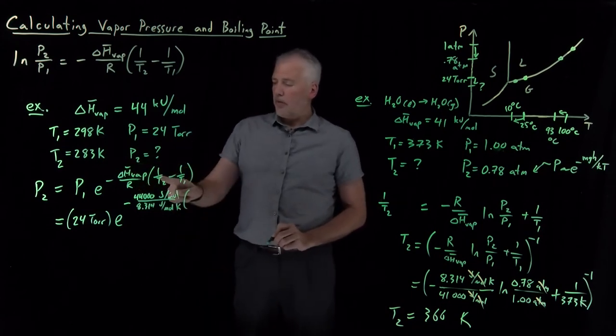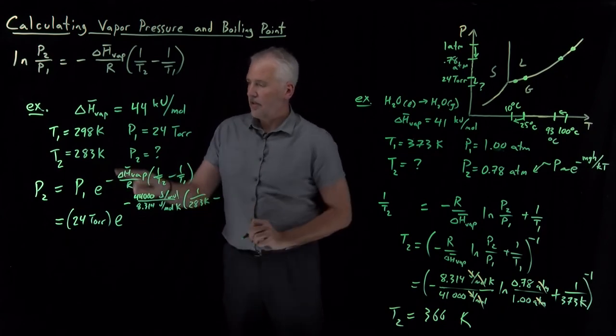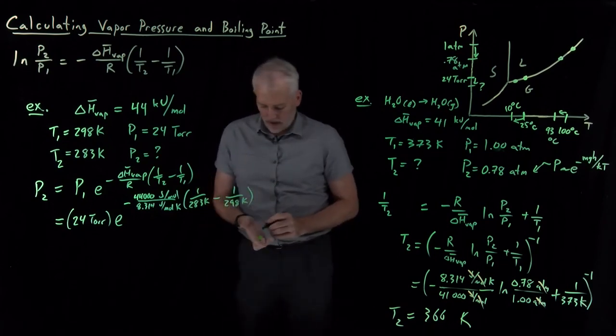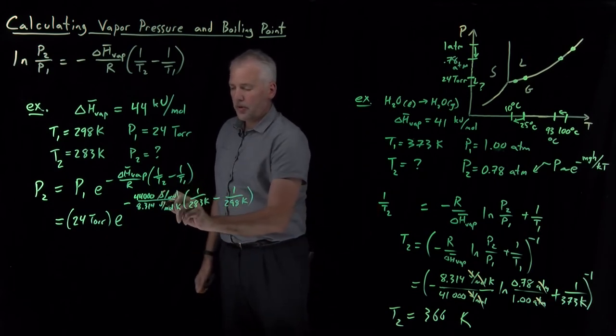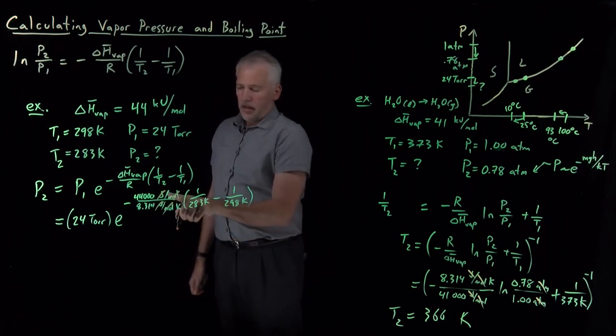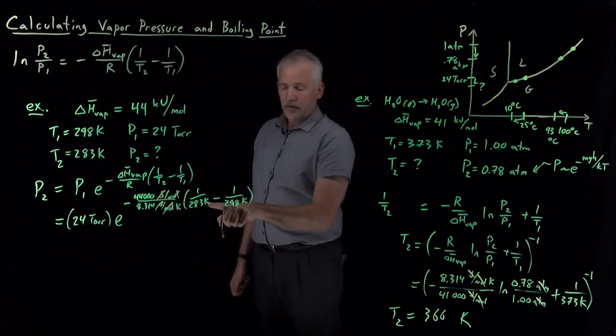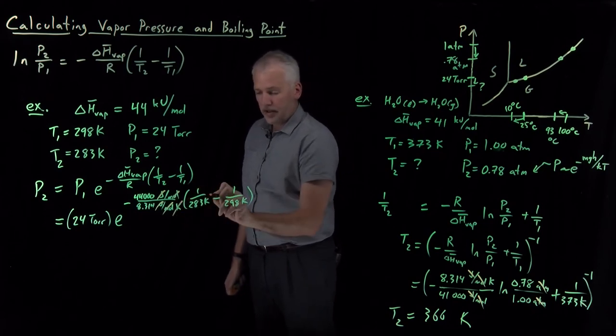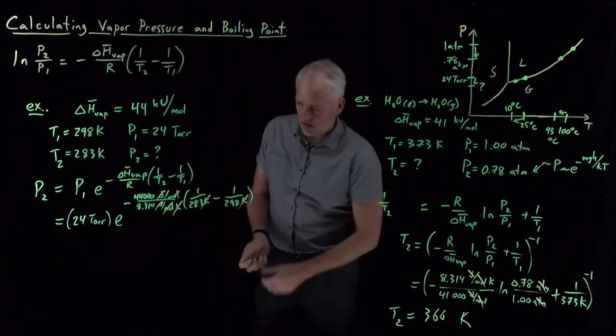Multiply that by 1 over T2. So 1 over 283 minus 1 over T1. And again, just to double check the units, those are going to work the same as before. Joules per mole cancel. This 1 over Kelvin outside the parentheses will perfectly cancel the 1 over Kelvin inside the parentheses. This is a 1 over Kelvin in the numerator. This is a 1 over Kelvin in the denominator. So the units in the exponent all go away, which is good. That's what they should do.